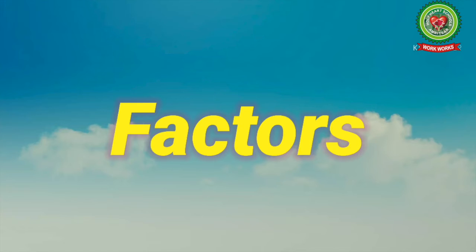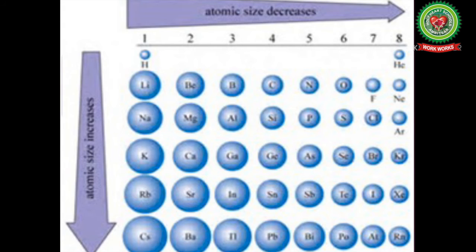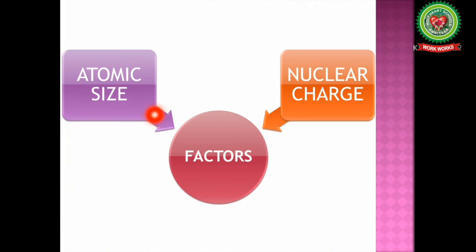Let's look at the factors on which electronegativity depends. Electronegativity depends upon two factors: first is atomic size, and the next one is nuclear charge. The greater the size of the atom, the lesser the electronegativity, since the electrons being further away from the nucleus experience a lesser force of attraction. The greater the nuclear charge, the greater the electronegativity, because an increase in nuclear charge causes electron attraction with a greater force.